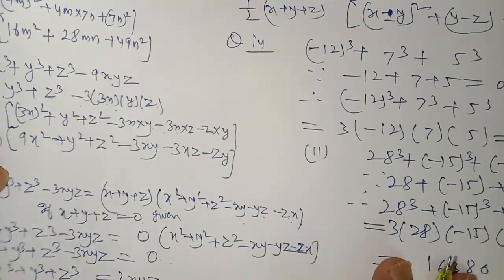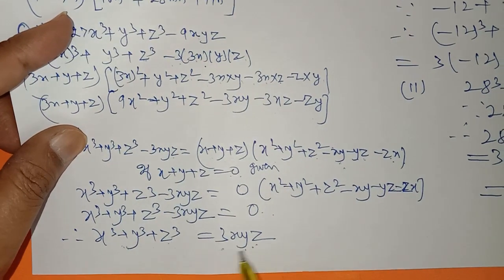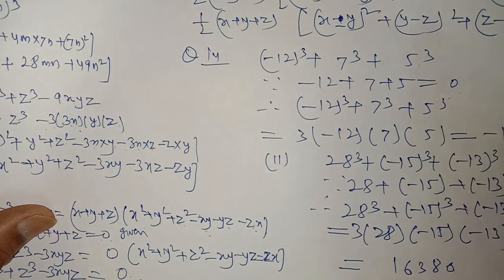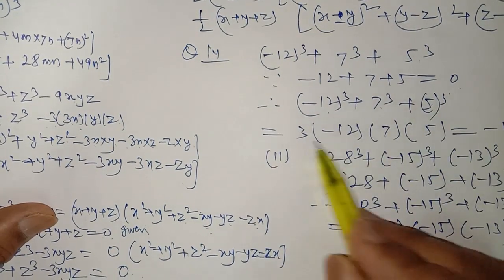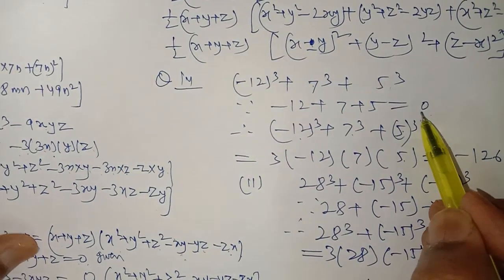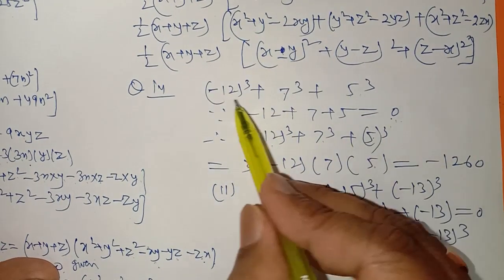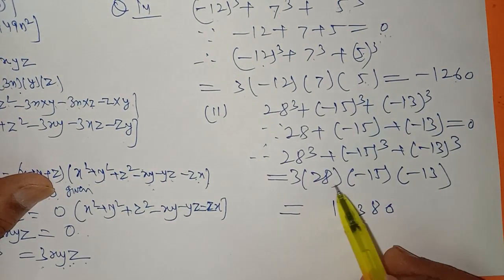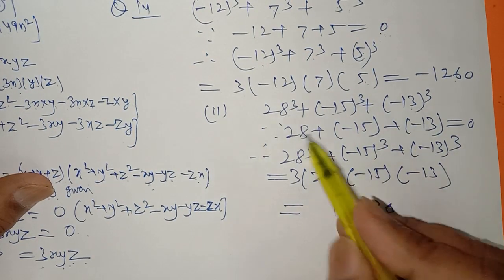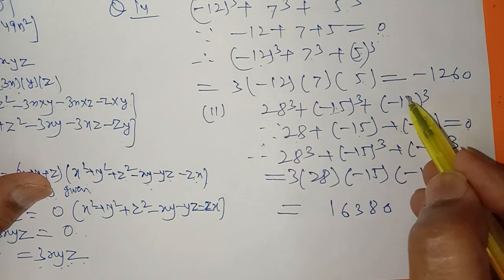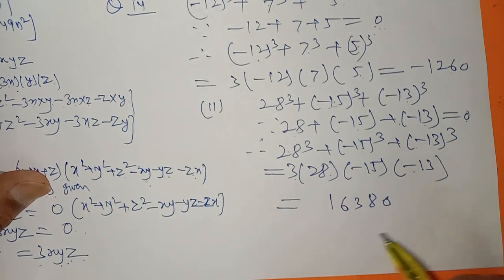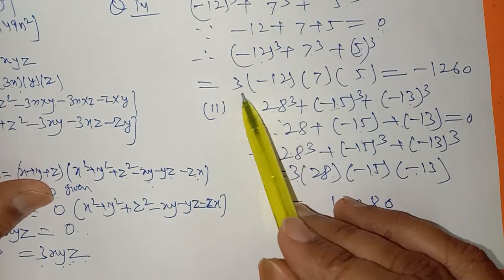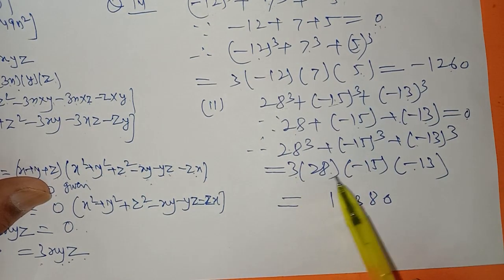This identity is used in question number 14. x³ plus y³ plus z³ equals 3xyz when x plus y plus z equals 0. First show that the sum of the three numbers is 0: minus 12 plus 7 plus 5 equals 0. Therefore their cubes' sum equals 3 times xyz — just multiply the three numbers. Similarly, 28 minus 15 plus minus 13 equals 0, so the sum of their cubes equals 3 into x into y into z.